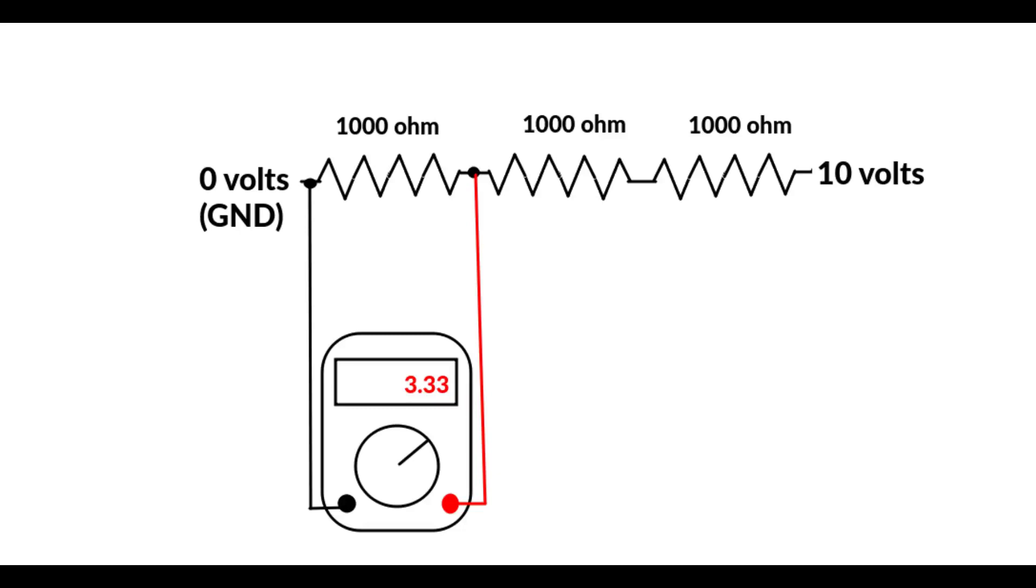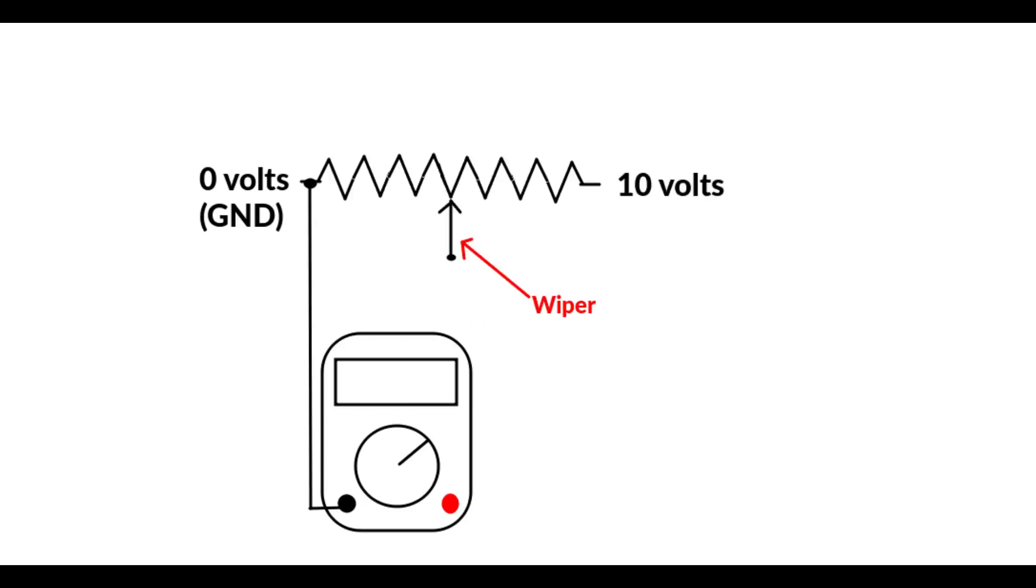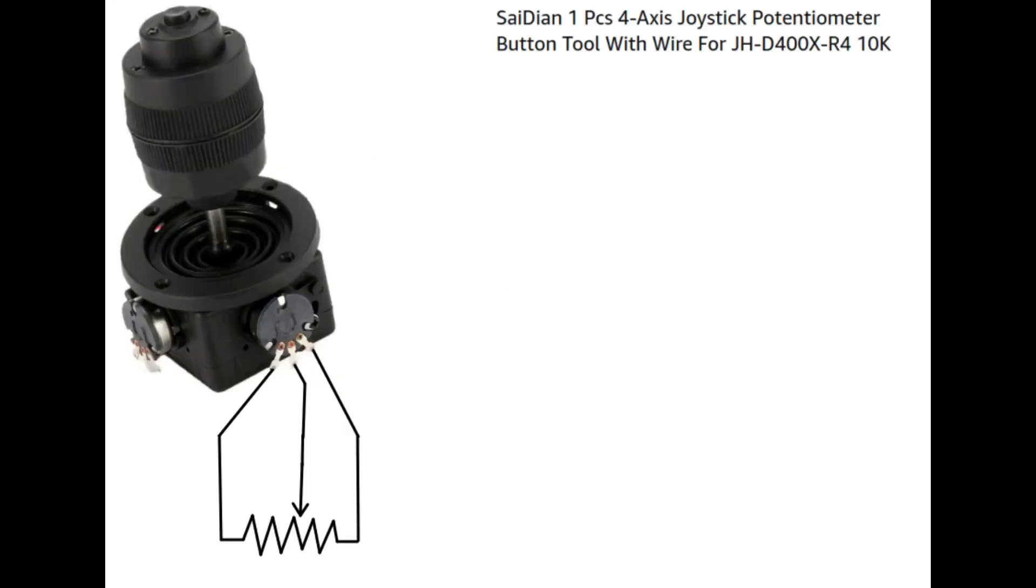What a potentiometer does is gives us the ability to measure at any point along the resistance instead of just having to pick taps in between resistors in series. We do that by moving a wiper along the resistance. The standard potentiometer has three leads. Two leads are connected across the constant resistance, that is whatever the potentiometer is rated for, and a third lead is connected to the center tap or wiper.